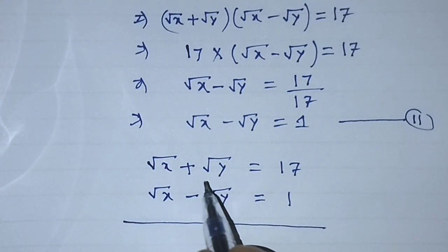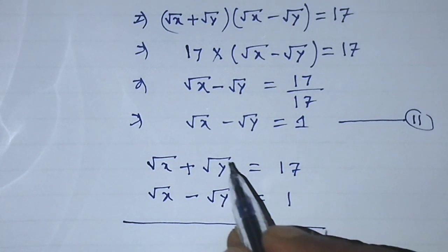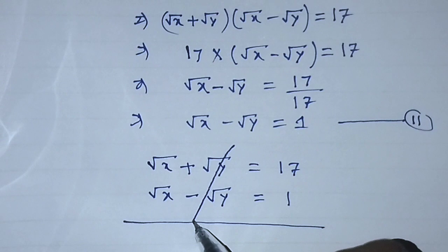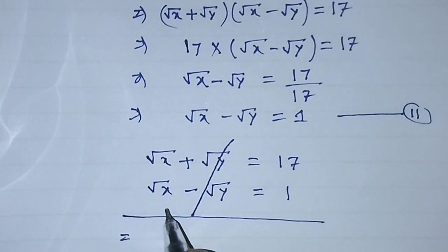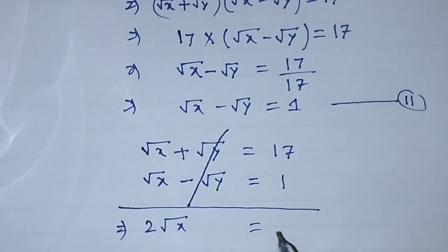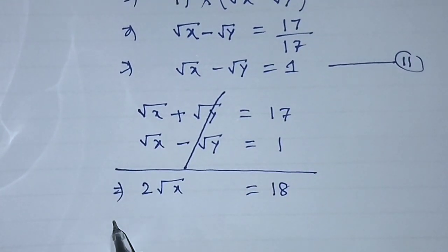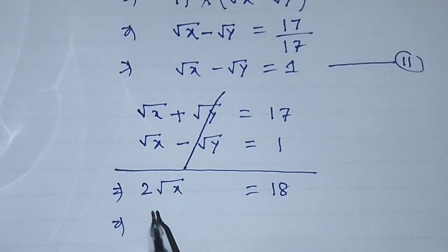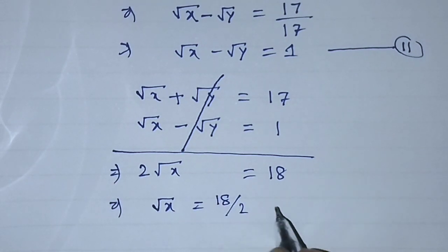On the left hand side of equation 1 we have root over of x plus root over of y, and in equation 2 we have root over of x minus root over of y. After adding, plus root over of y and minus root over of y cancel out. On the left hand side we get 2 root over of x, and on the right hand side 17 plus 1 equals 18. Transposing 2, we get root over of x equals 18 over 2, that is 9.